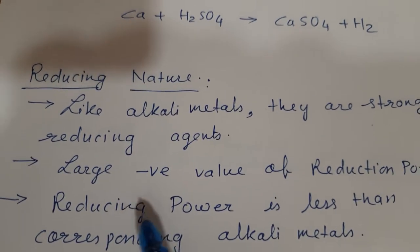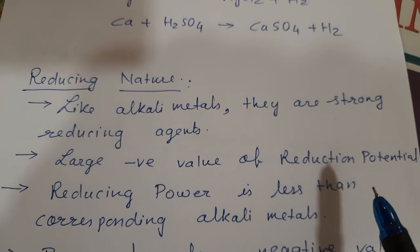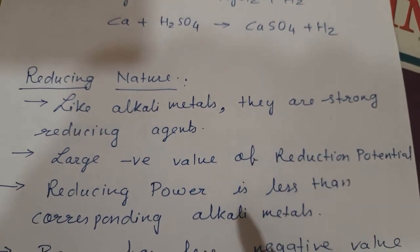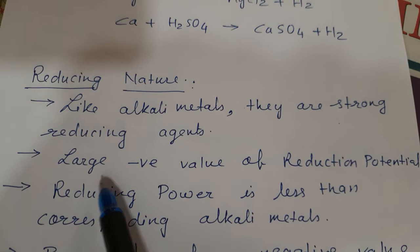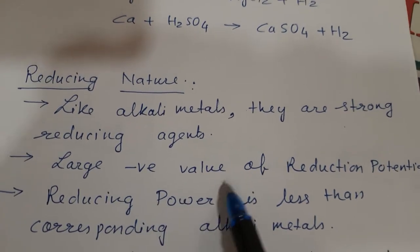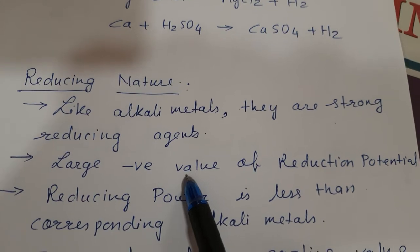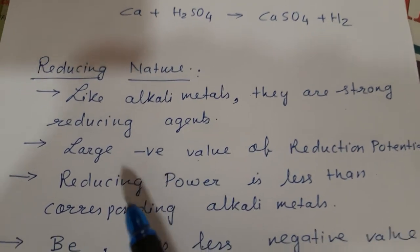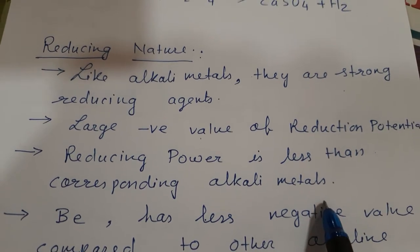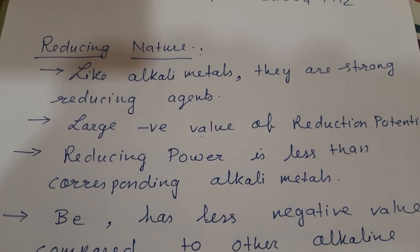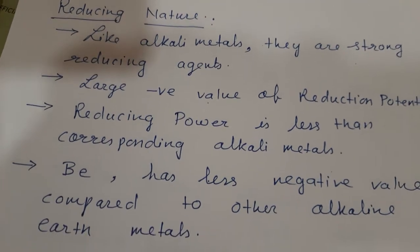They have large negative values of reduction potential. The larger the negative value of reduction potential, the stronger the reducing agent. However, their reducing power is less than that of corresponding alkali metals.